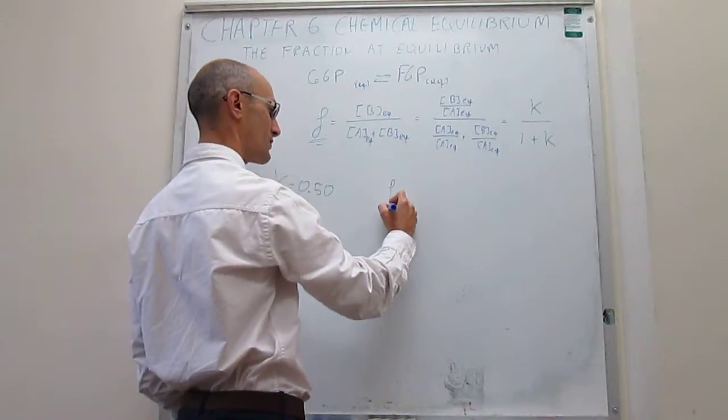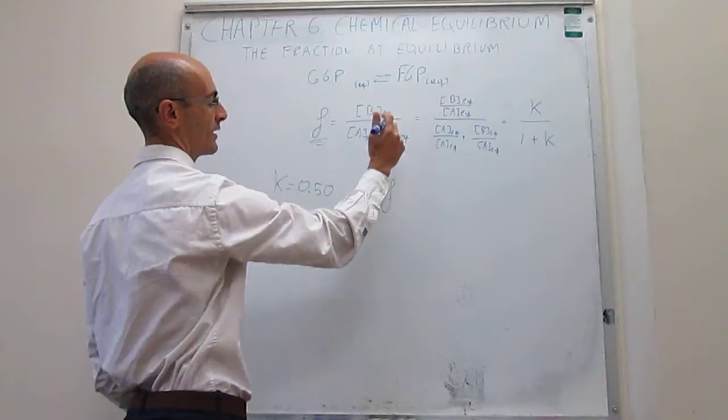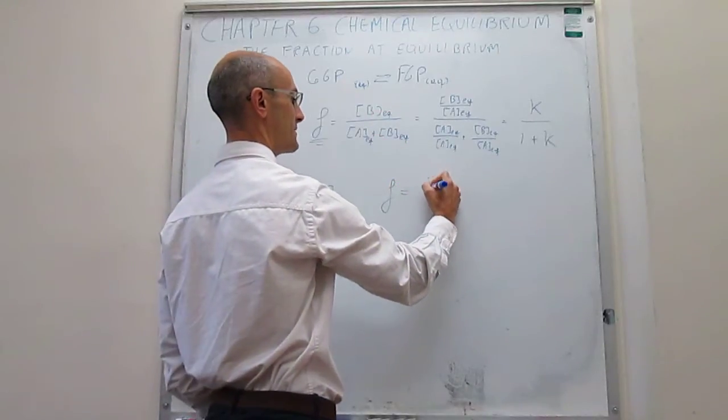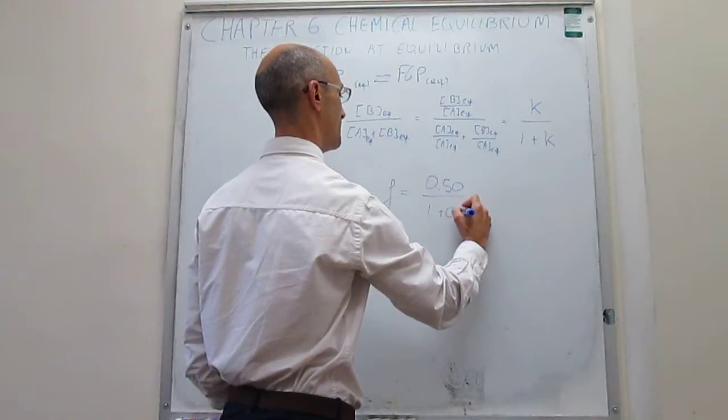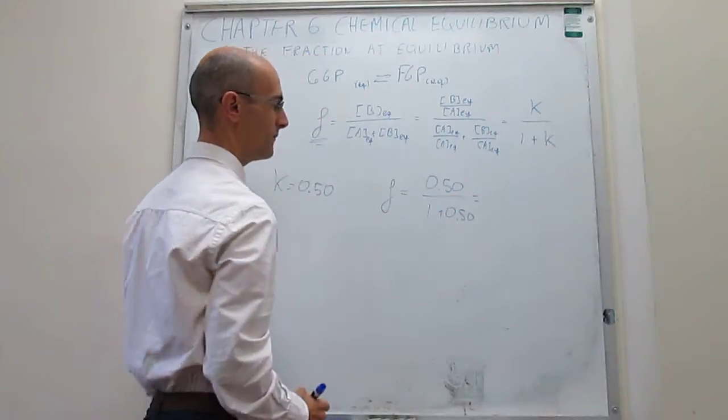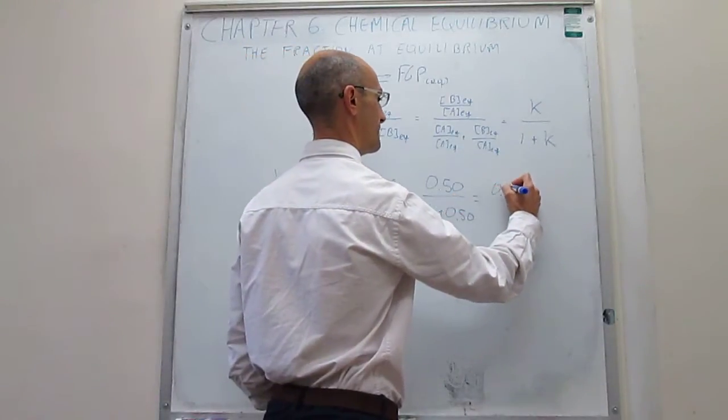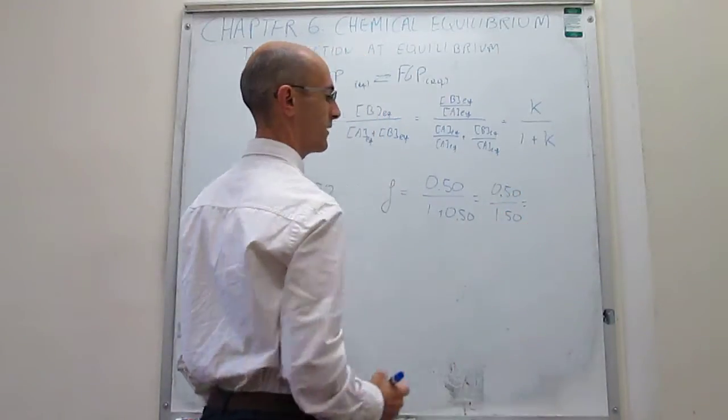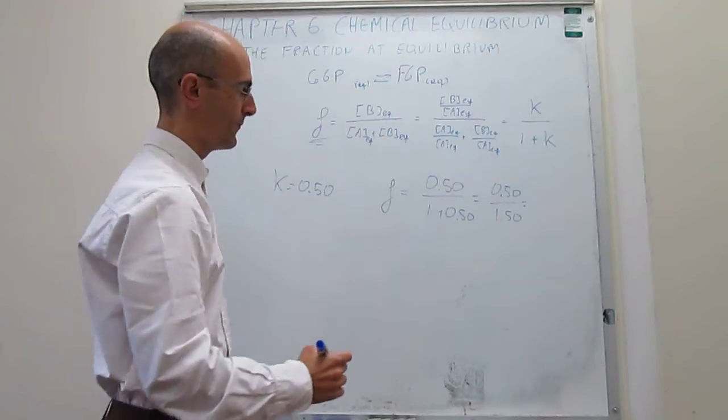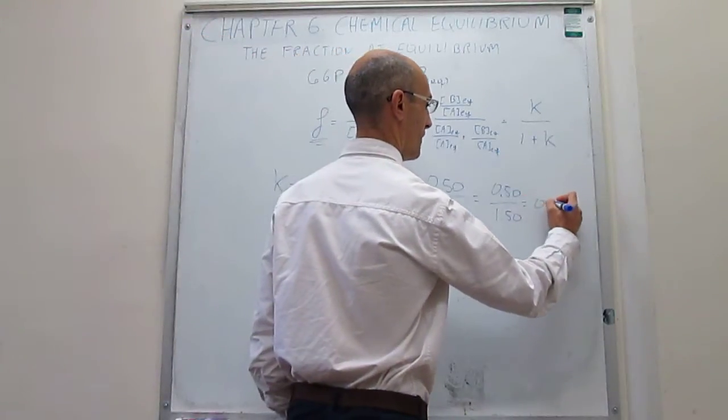So we can calculate the fraction of fructose-6-phosphate at equilibrium as 0.50 over 1 plus 0.50. That is 0.50 over 1.50, which is going to be one-third, or 0.33.